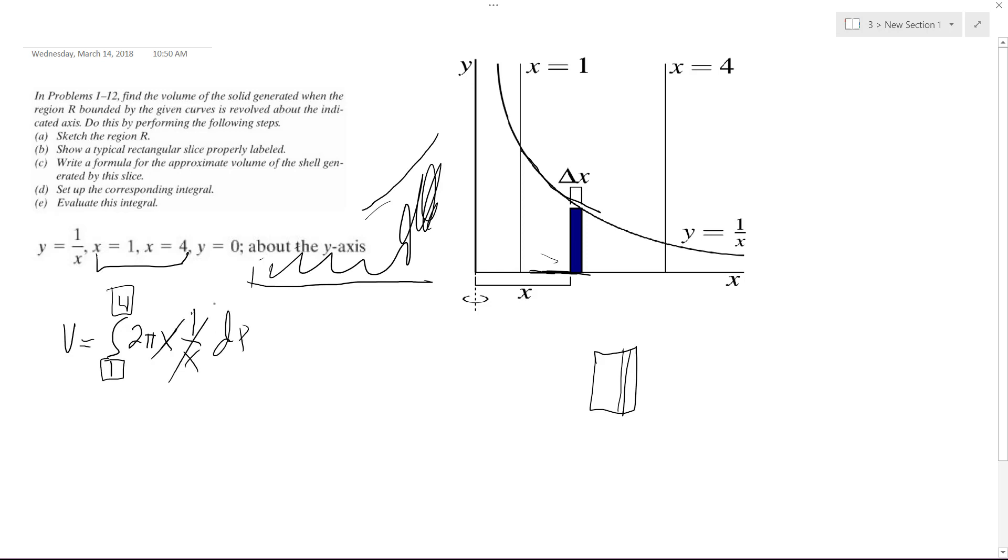And then dx, oh, that works out conveniently. So what we end up with is just 2 pi x because the integral of dx is just x. Or just 1, so we get dx, so we get 1 to 4.